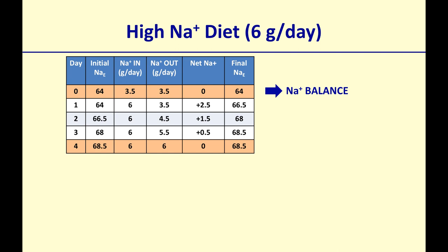At day number one, the patient starts the high sodium diet at 6 grams per day. The kidneys try to maintain sodium balance, but it takes about three to five days to match intake with excretion. The first day, the kidneys are still excreting only 3.5 grams — way behind — because they haven't had enough time to adapt. So at the end of the day, this person gains 2.5 grams of sodium, and the final total body sodium is now 66.5 grams.